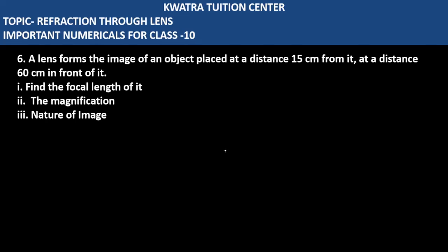Let's start with question number six. It says a lens forms the image of an object placed at a distance of 15 centimeters from it, at a distance of 60 centimeters in front of it. Find the focal length. So we have u and v already given. u is minus 15 centimeters, and v is minus 60 centimeters — the image forms on the same side.